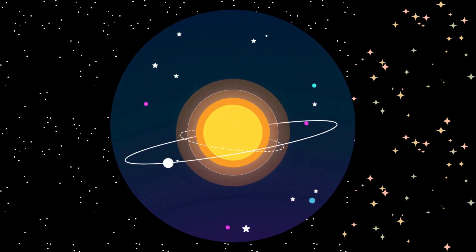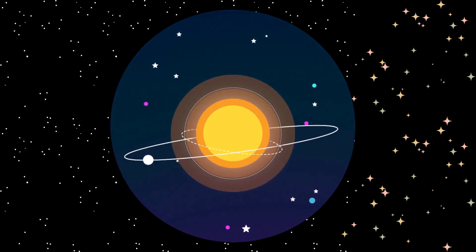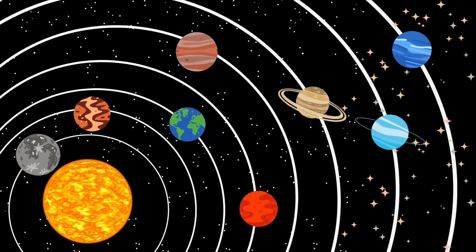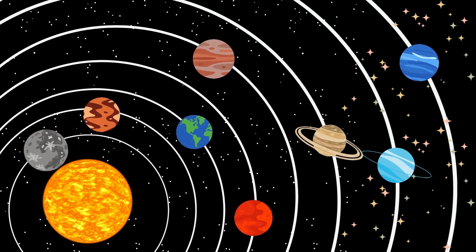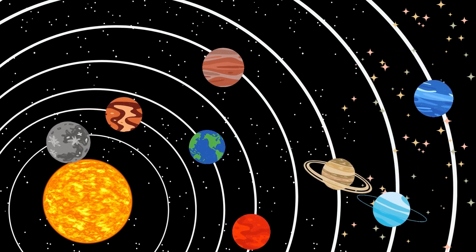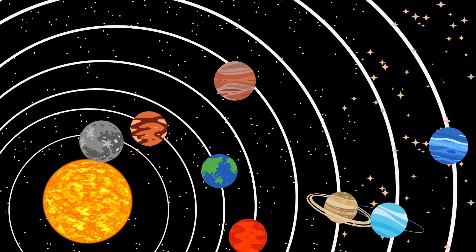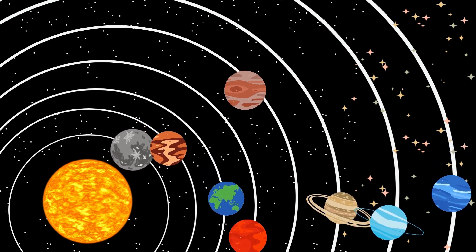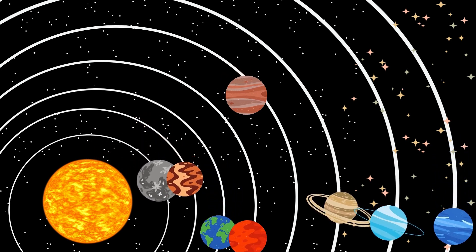Planets in our solar system orbit or revolve around the Sun. Each planet follows a specific path or orbit around the Sun. In addition to orbiting the Sun, planets also spin or rotate on their own axes. This rotation causes day and night on a planet.